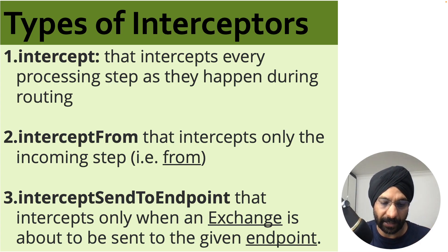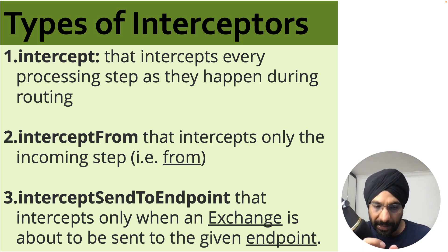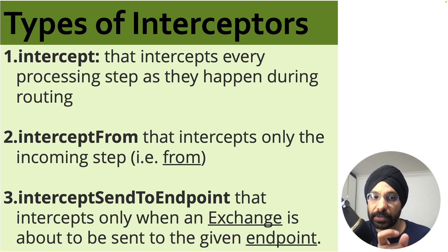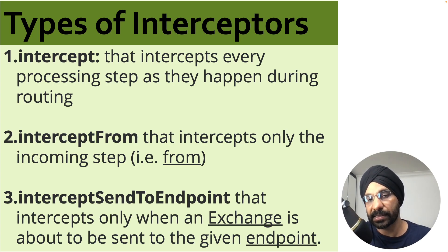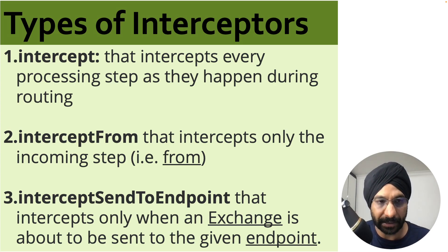With intercept send to endpoint, let's say you have a simple route going from A to B, B to C. As data goes from A to B and B is trying to send to C, you can put your interceptor right there. You can use this third type of interceptor to build that particular design pattern.